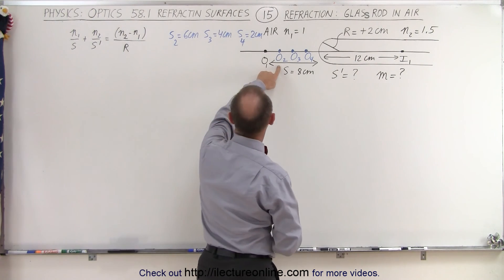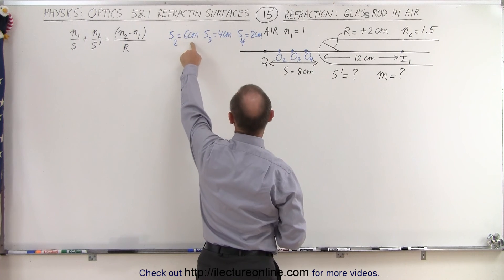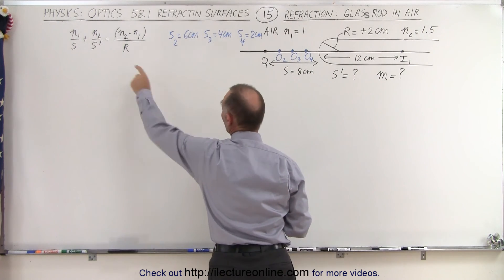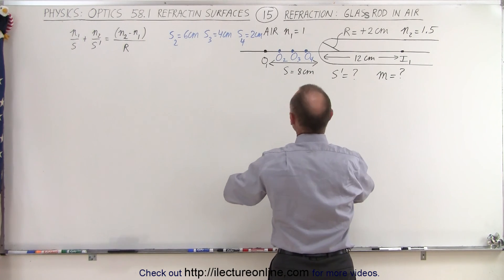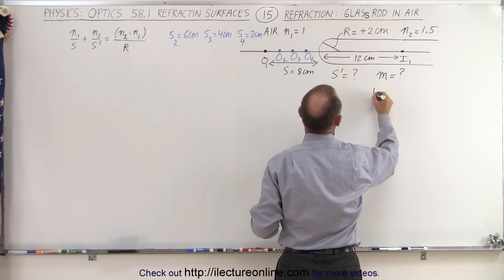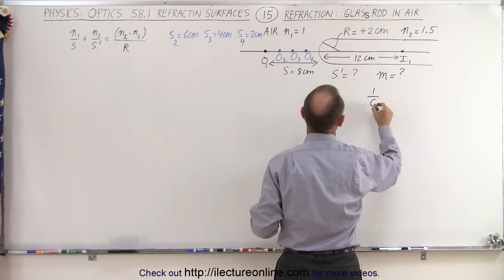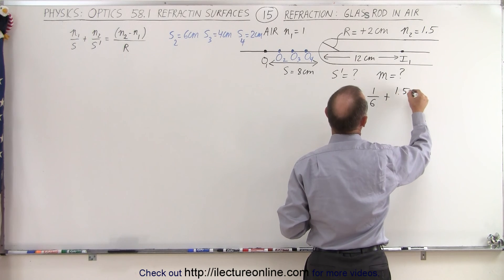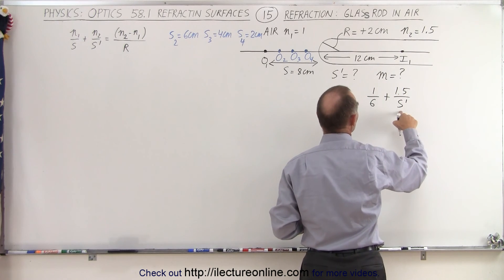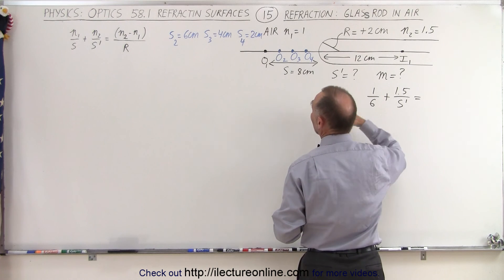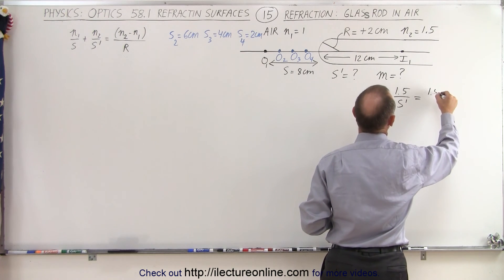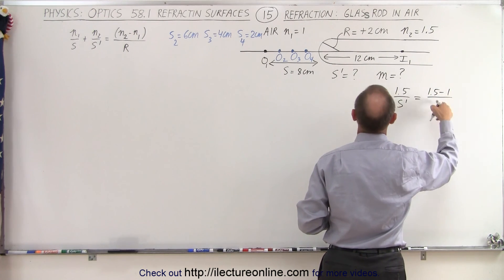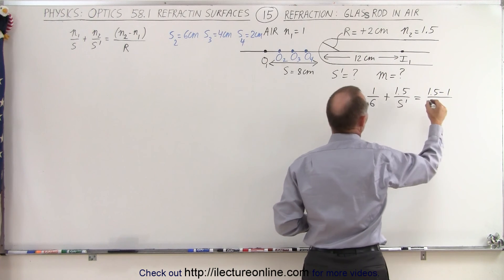Starting with this one right here, object 2 is placed at a distance of 6 centimeters. Using our equation, we have n1 over s, that would be 1 over s. In this case, it's going to be 6 centimeters. Plus n2, which is 1.5 over s prime, which is what we're looking for, is equal to n2 minus n1, which is 1.5 minus 1, divided by the radius of curvature, which is a positive 2.